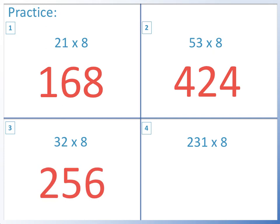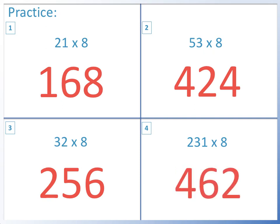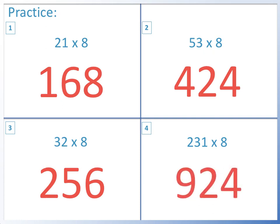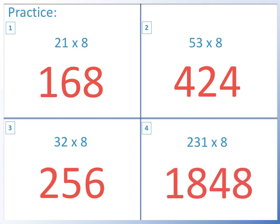Question 4: 231 times 8. Double it equals 462. Double it equals 924. Double it again equals 1,848.